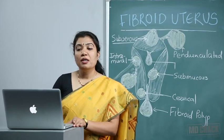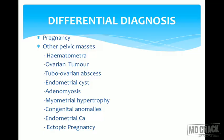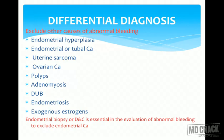Let's continue with fibroids. We had seen the differential diagnosis, pregnancy, and other pelvic masses. Now when we are investigating, we should exclude other causes of abnormal bleeding because we know it's a hyperestrogenic condition. Fibroid may be the cause of bleeding, but there can be associated conditions which are important to rule out before concluding that the abnormal uterine bleeding is just because of fibroids.